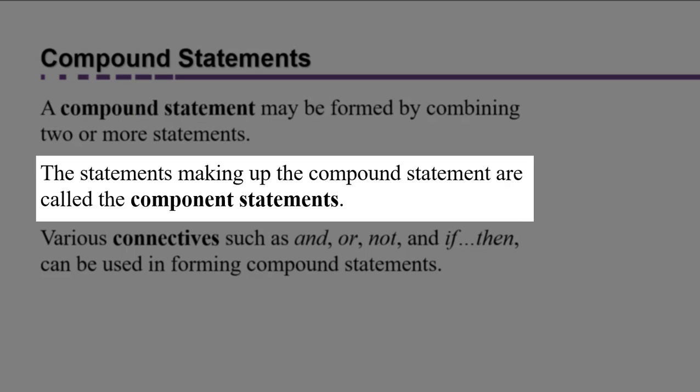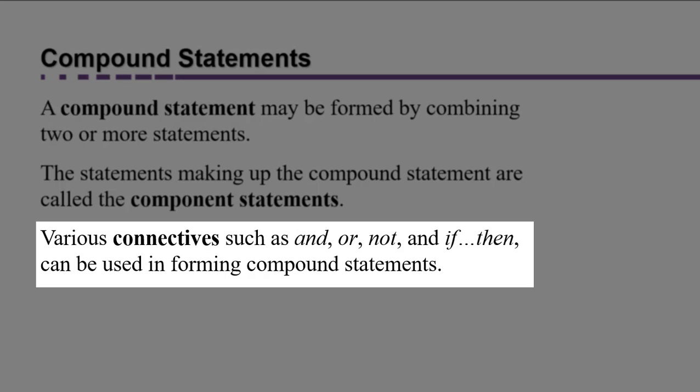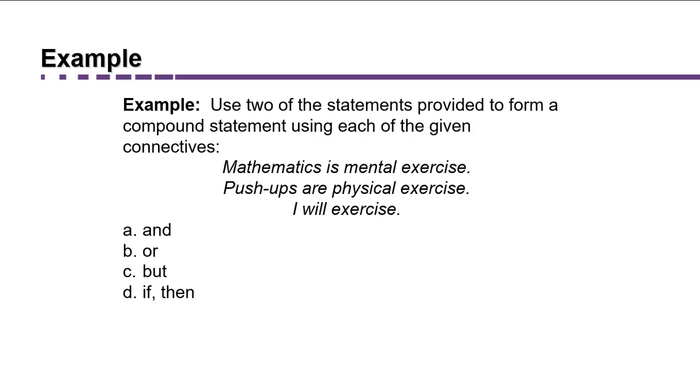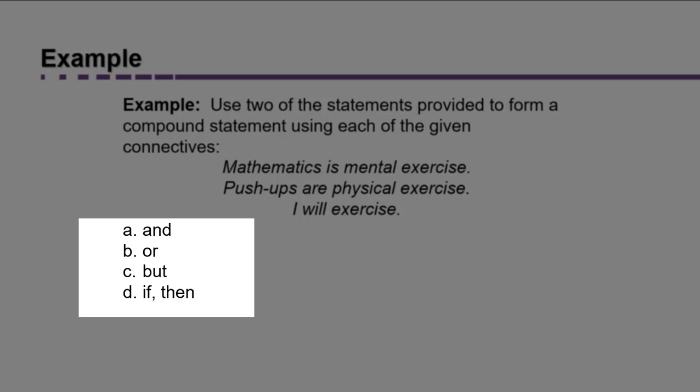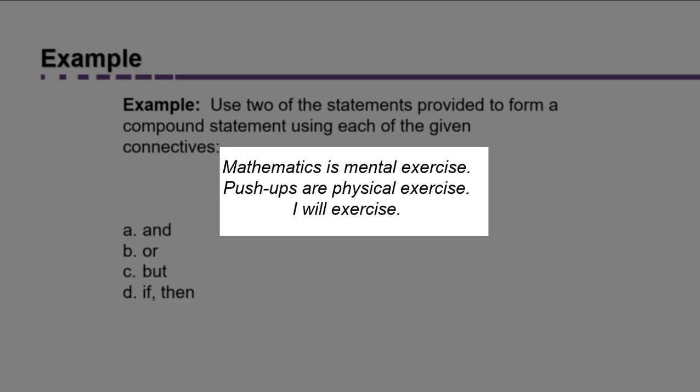The statements that make up the compound statement are called component statements, and we connect them with words referred to as connectives, like 'and,' 'or,' 'not,' and 'if-then.' So for example, I could take any of the connectives — and, or, but, and if-then — and join any of these three simple statements.